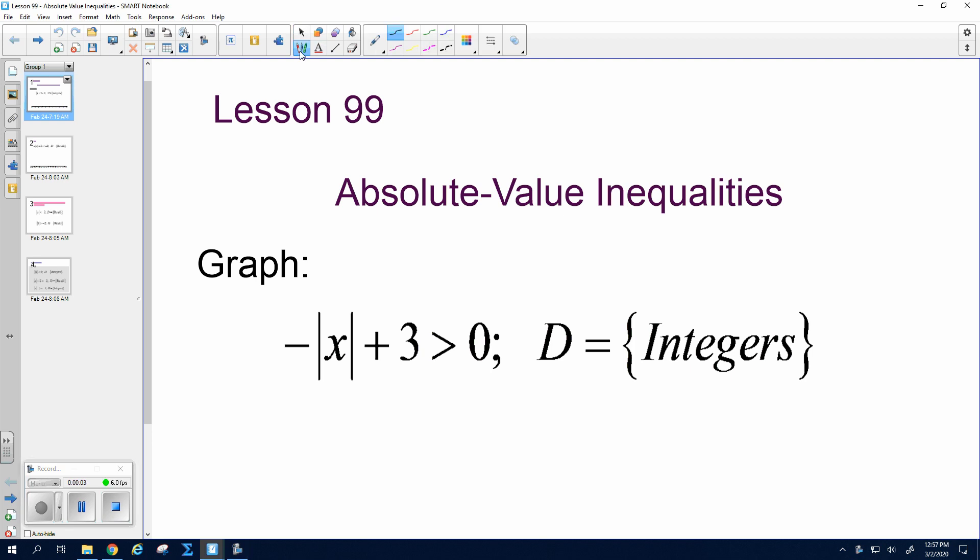All right, lesson 99, absolute value inequalities. These are always going to turn into and graphs or or graphs that we've already done, where they point out or you shade in between two numbers. All right, so write that down.